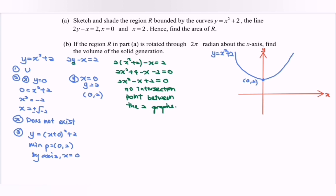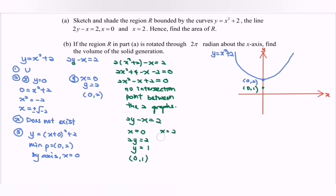Next, we focus on the line 2y − x = 2. Substitute x = 0: 2y = 2, so y = 1, giving point (0, 1). Then substitute x = 2: 2y = 2 + 2 = 4, so y = 2, giving coordinate (2, 2).